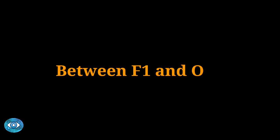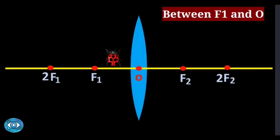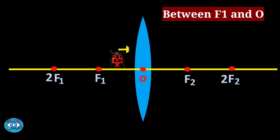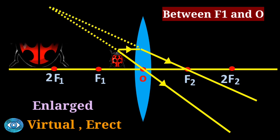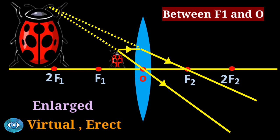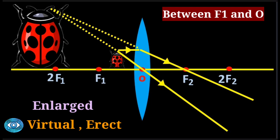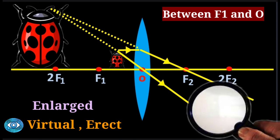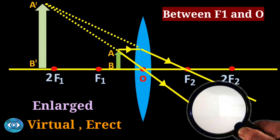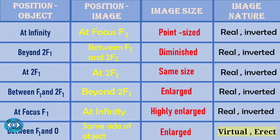Case six is the final case for convex lens and is a special case — a small ladybug is the object placed between f1 and the optical center O. The light rays are not meeting, so we produce them backwards to obtain the image. The image is magnified, formed on the same side as the object, and is a virtual image — virtual images are always upright. This is the principle of the magnifying glass. A summary of all cases is given in a table.